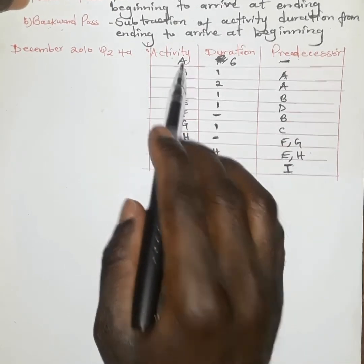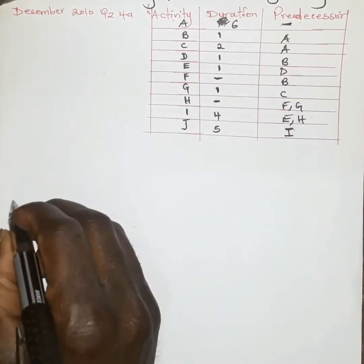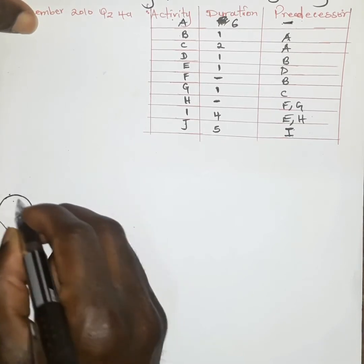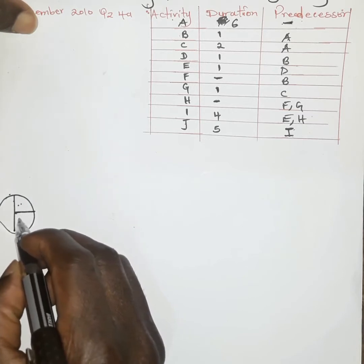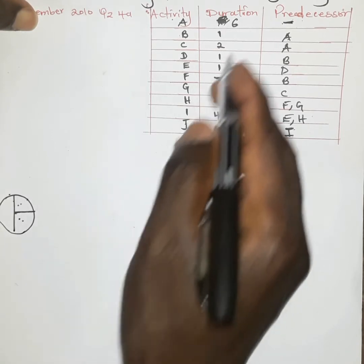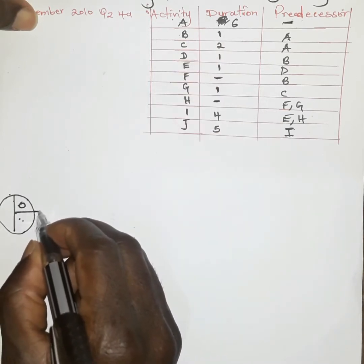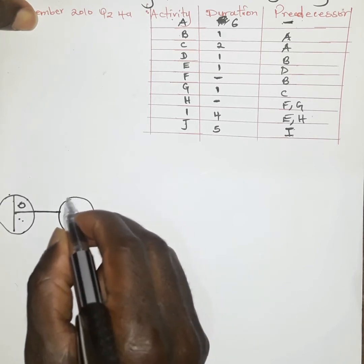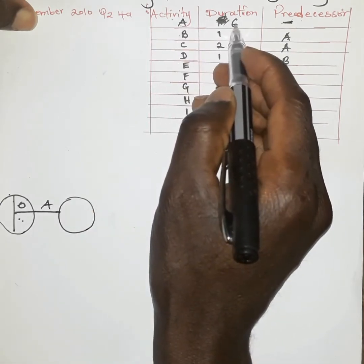When we start drawing activity A, because it does not have any predecessor, we are going to begin from zero. We normally have the earliest starting node and the latest starting node — an activity can either start early or late. Because activity A is zero, we begin from zero, and we highlight activity A as given here. Its duration is six weeks, so we write six.